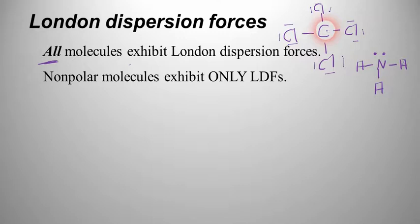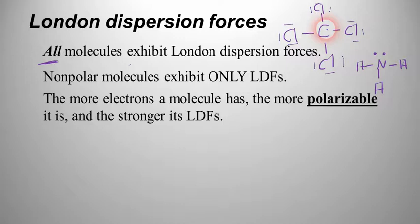If it's nonpolar, it has only London dispersion forces. Here's another important thing about London dispersion forces: the more electrons a molecule has, the more polarizable it is, and as a result it's going to have stronger LDFs. In our previous example we had neon, which has 10 electrons. If we imagine an atom of helium, it would only have two electrons. If those two electrons are both on the same side, there's a London dispersion force there, but these two electrons really can't do a whole lot — the force is so weak it's almost practically negligible.